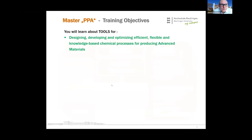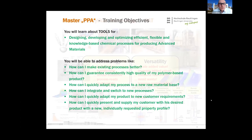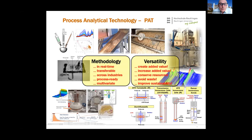In the PPA master's program you will learn the necessary tools for designing, developing, and optimizing efficient, flexible, and knowledge-based chemical processes for producing advanced materials. Using many practical examples, you will learn to address problems like: How can I make existing chemical processes better? How can I guarantee consistently high quality of polymer-based products? How can I quickly adapt my process to a new raw material or integrate new processes? You will learn to think about chemical processes and polymer products in a quality-based way.